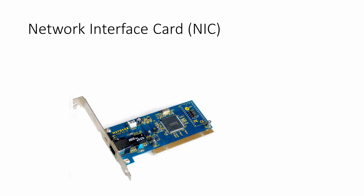In order for a computer to communicate on a network, it must have a network interface card inside it. All you will normally see on a desktop computer is a port on the back which you can plug a network cable into. It's the network interface card that transmits and receives the electrical signals which represent the data being communicated.